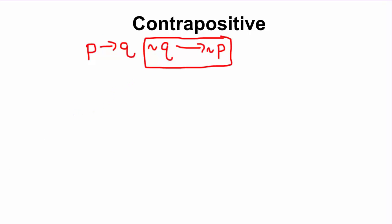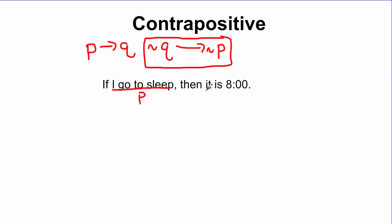So let's look at an example. If I go to sleep, then it is 8 o'clock. Here, my hypothesis is P — I go to sleep — and it is 8 o'clock is Q, the conclusion.